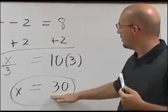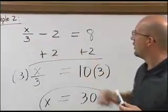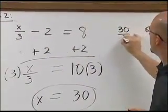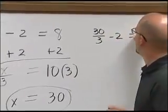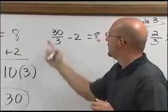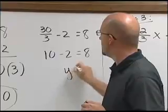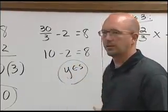We can take our variable x equals 30, put it back into our original problem to check our answer. 30 over 3 minus 2. Does that equal 8? 30 divided by 3 is 10 minus 2. That does indeed equal 8. Yes, we are correct.